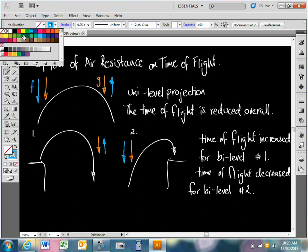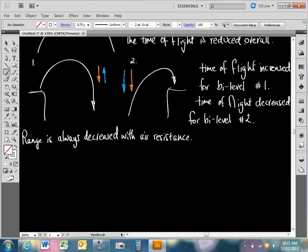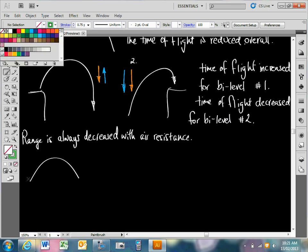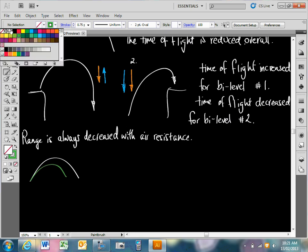One more thing to say is that the range is always decreased with air resistance. And that's evident in those diagrams that I drew in the last lesson. If we have a nice parabola and then we draw our path here, the range is always going to be decreased with air resistance. And I think that's intuitive. If you think there's a force acting on some velocity, it's always going to reduce that velocity if it's in direct opposition with that velocity.